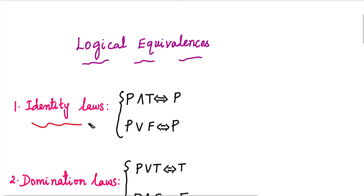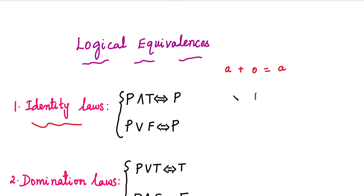Let's start with identity. In arithmetic, additive identity is 0 and multiplicative identity is 1. We will solve and get the same answer using that concept.